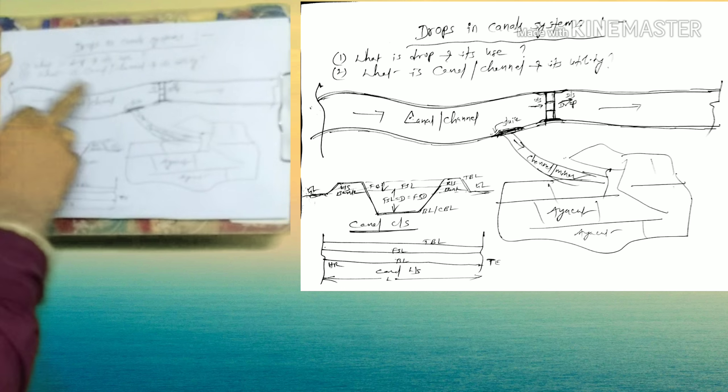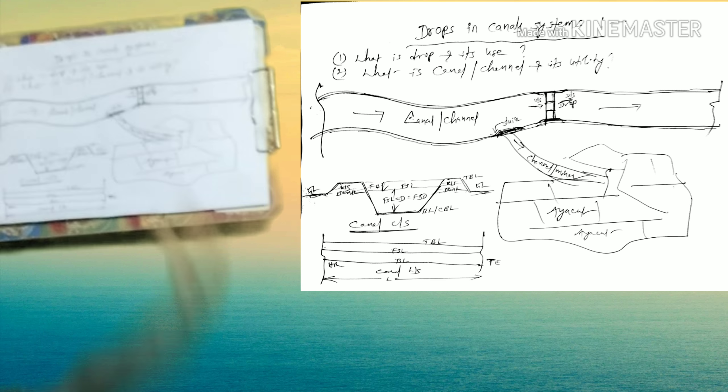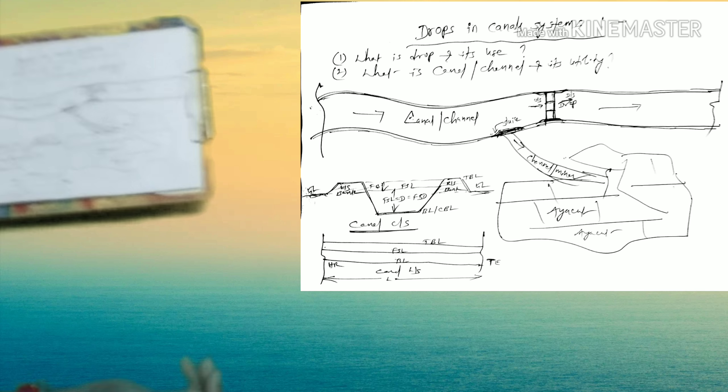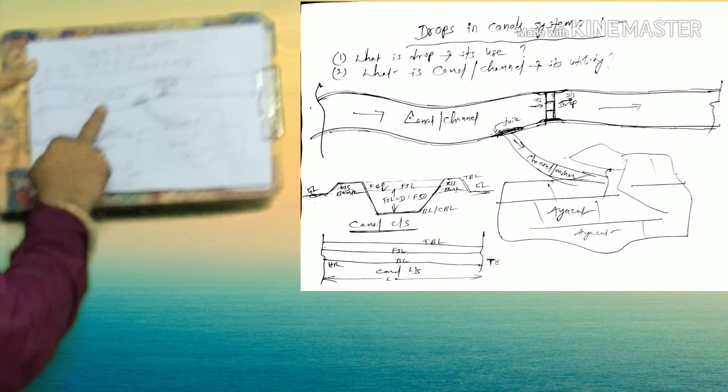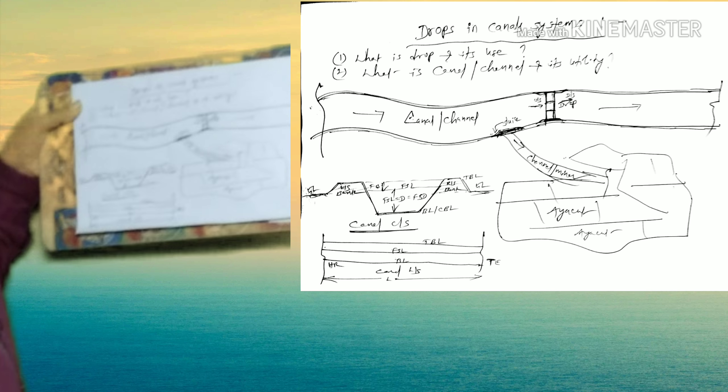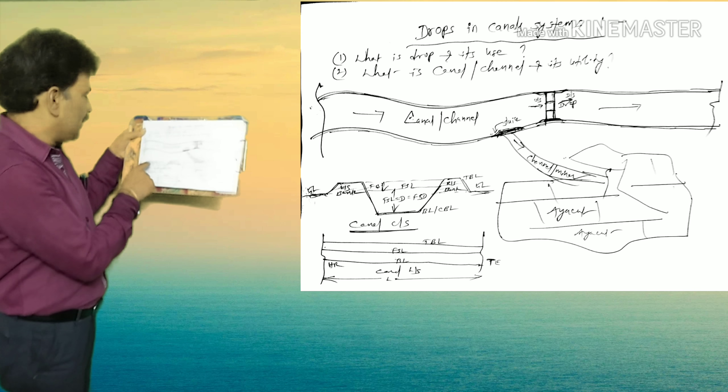Generally, from main canal, either branch canal or major is taken off. From major, minor is taken off, from minor, sub-minor, and from sub-minor, field channel is excavated, which is called as channel.